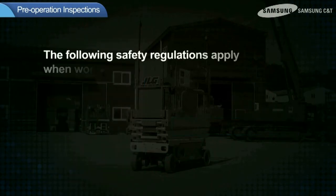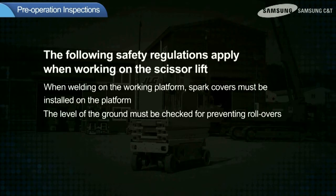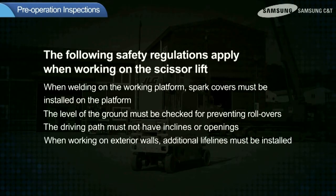The following safety regulations apply when working on scissor lifts. When welding on the working platform, spark covers must be installed on the platform. The level of the ground must be checked to prevent rollovers. The driving path must not have inclines or openings. And when working on exterior walls, additional lifelines must be installed.